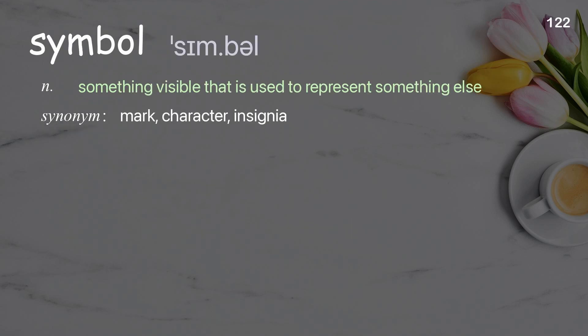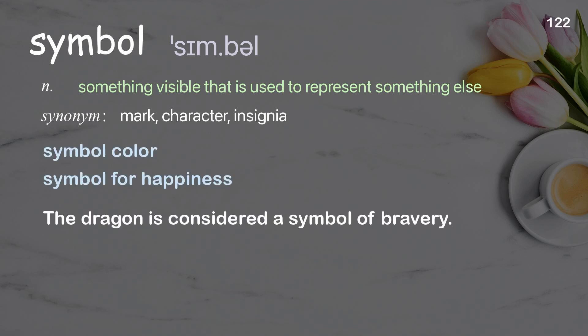Symbol: Something visible that is used to represent something else. Examples: symbol color, symbol for happiness. The dragon is considered a symbol of bravery.